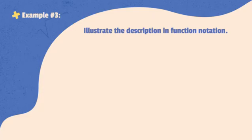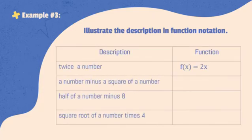Example number 3: Illustrate the description in function notation. For example, the description is twice a number. Let X be that number. The function is 2 times X. Try answering the next descriptions.